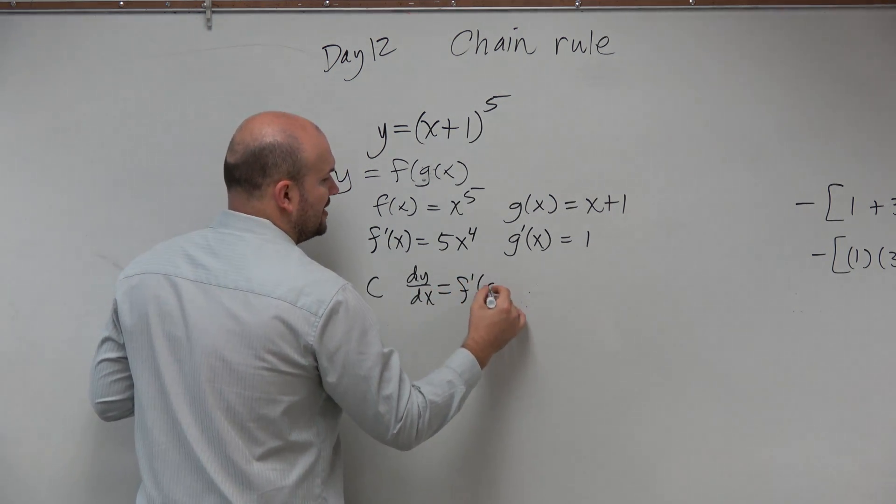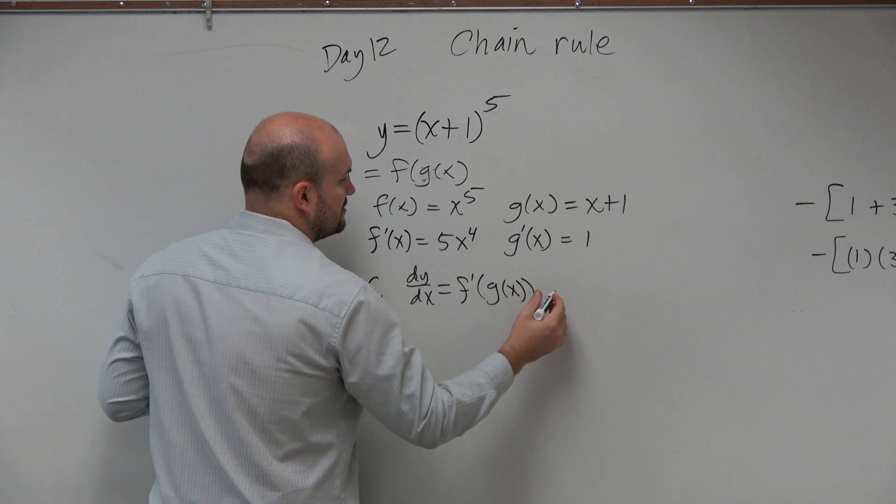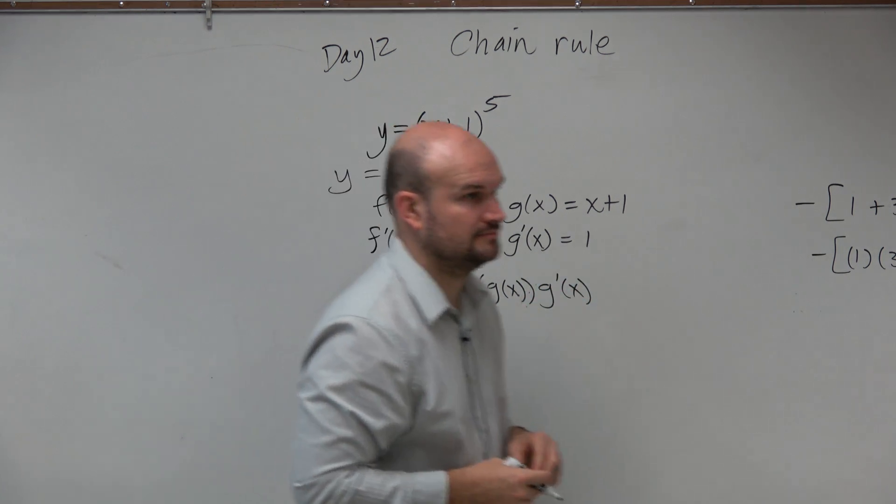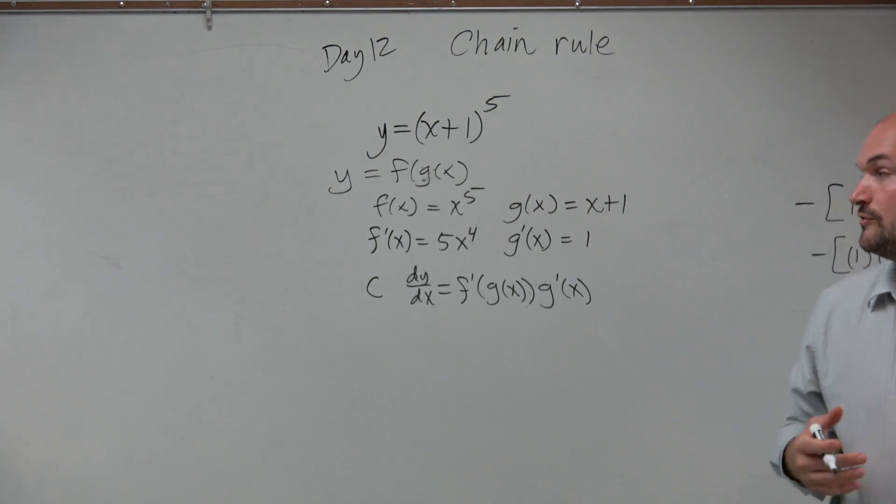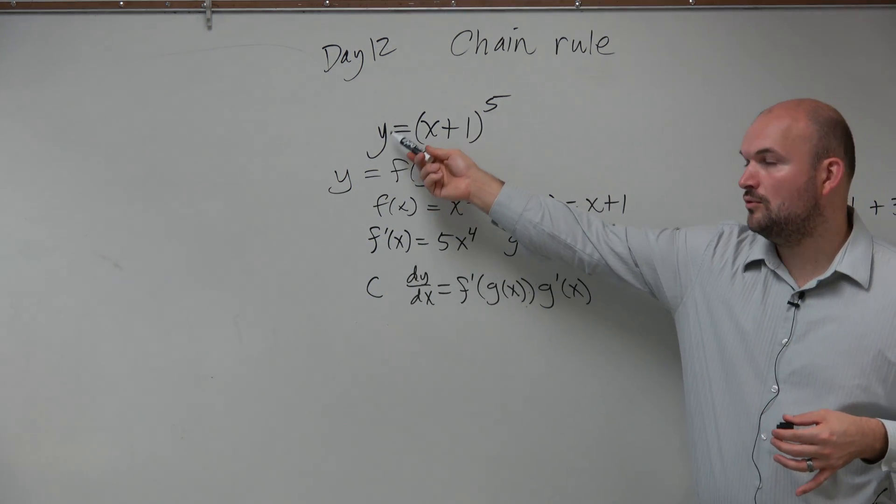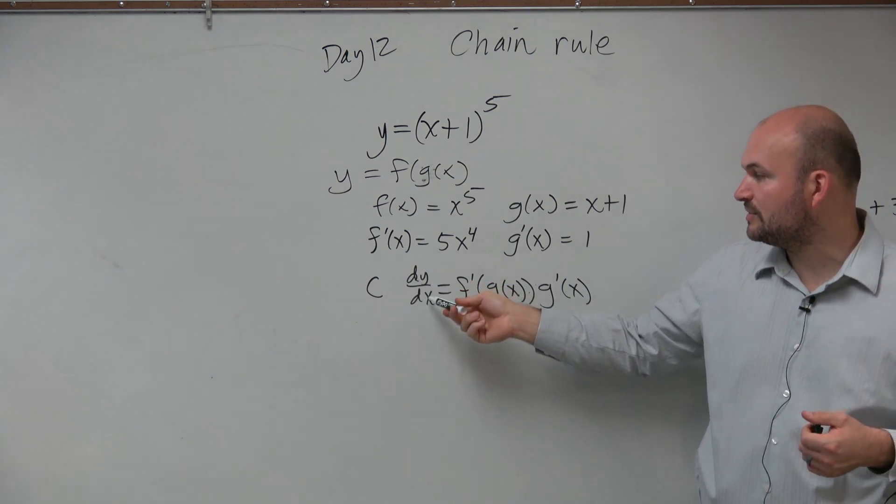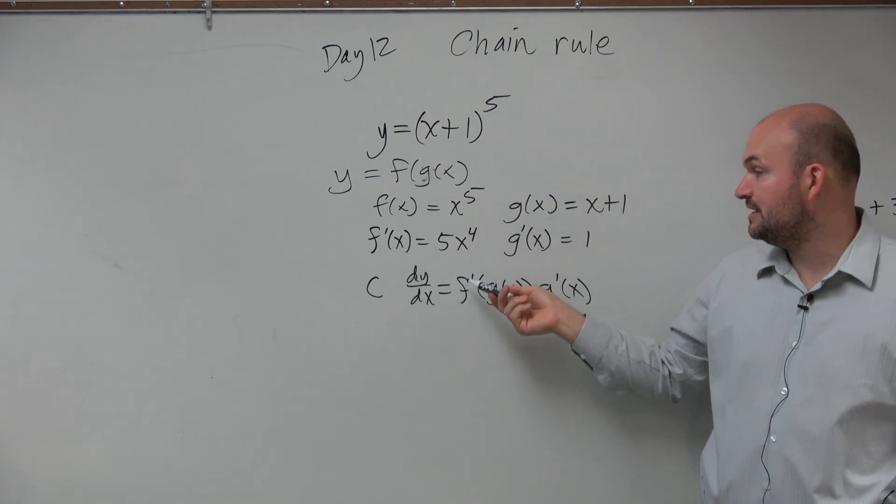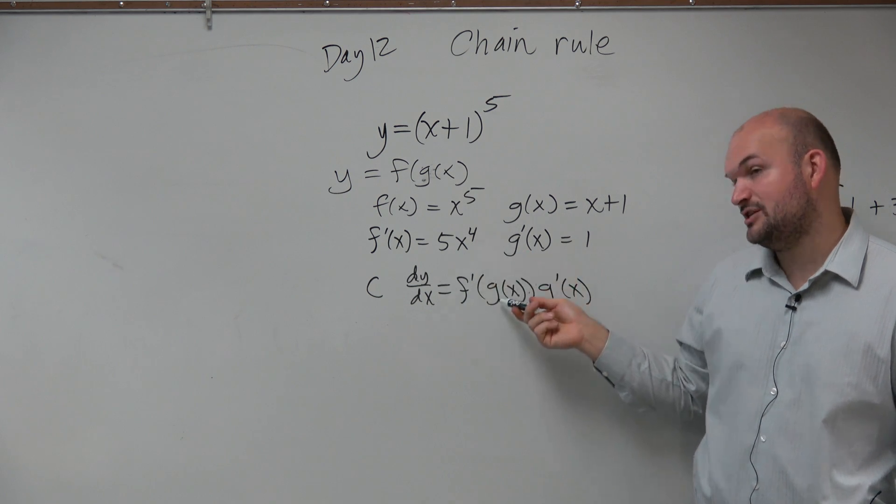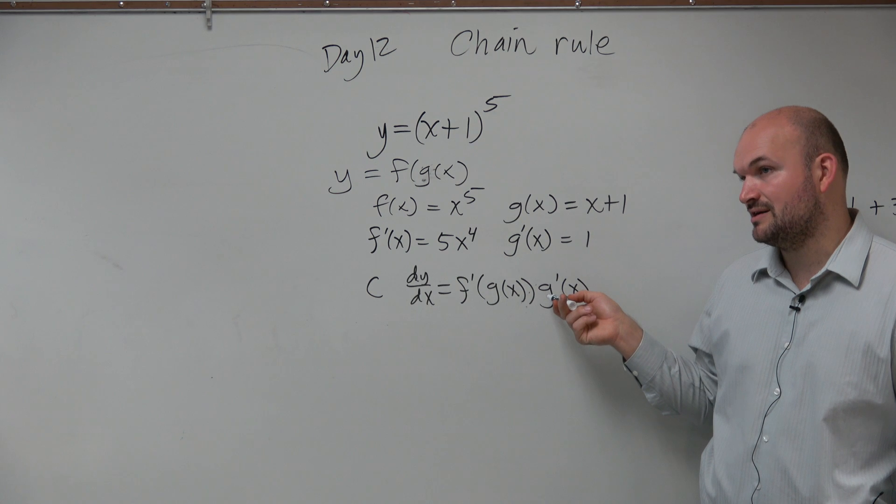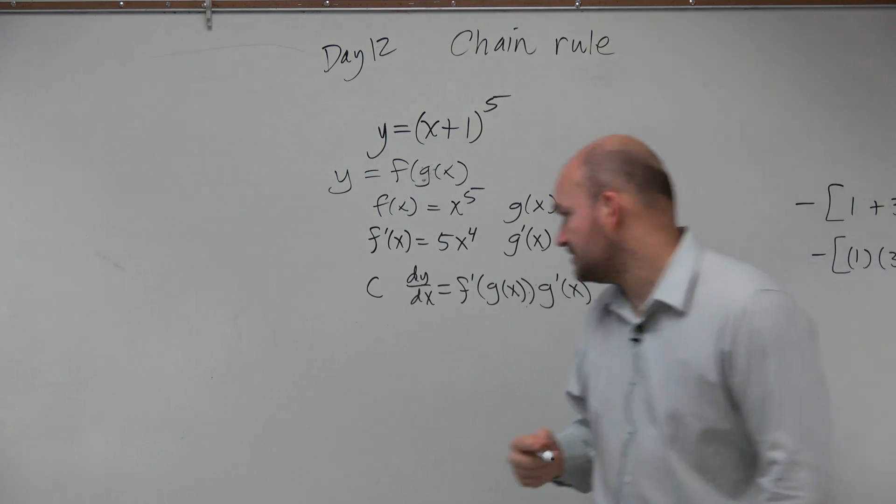The chain rule is basically going to say that when we have a function like that, it's going to equal f prime of g of x times g prime of x. So if we are going to differentiate y, we're going to take the derivative of the function, enter in g of x, and then multiply that by the derivative of g prime of x.